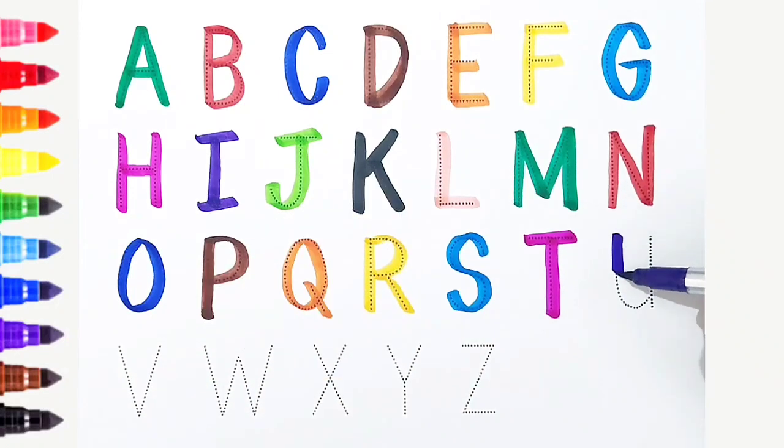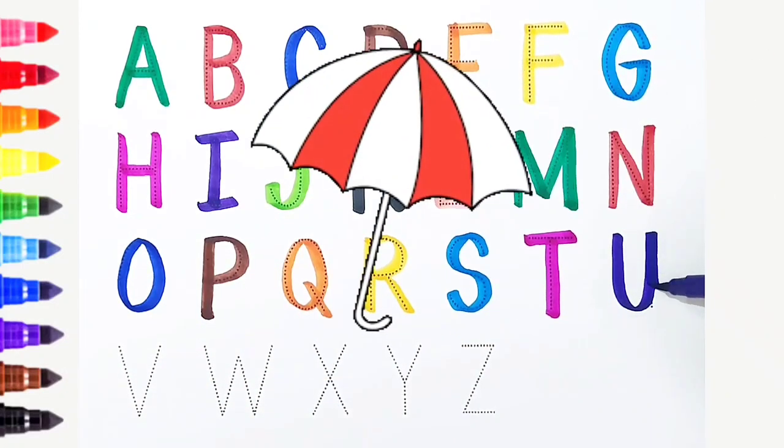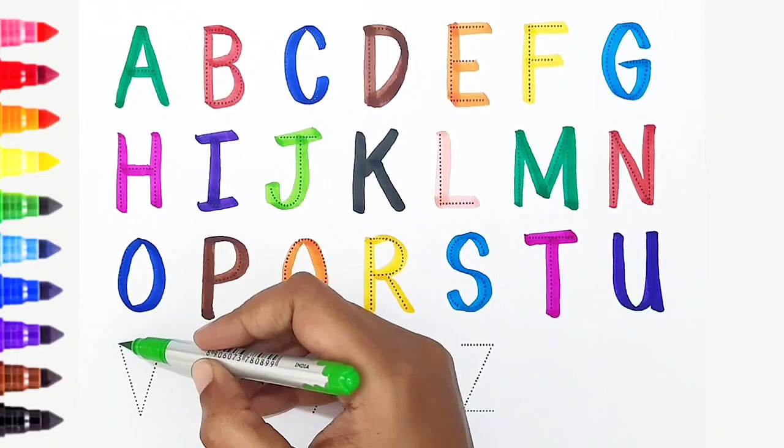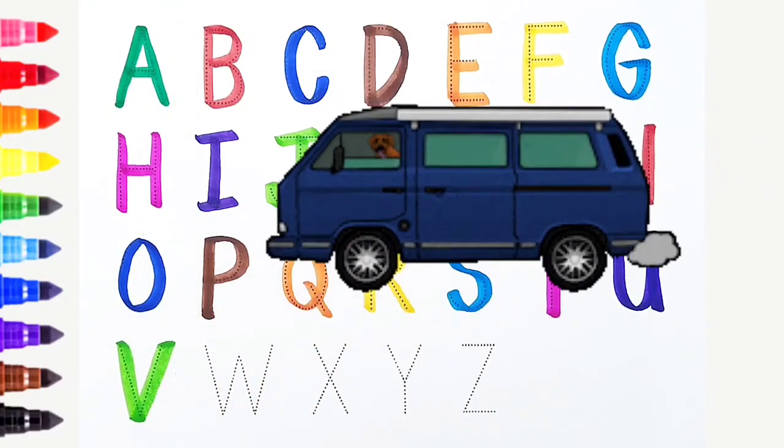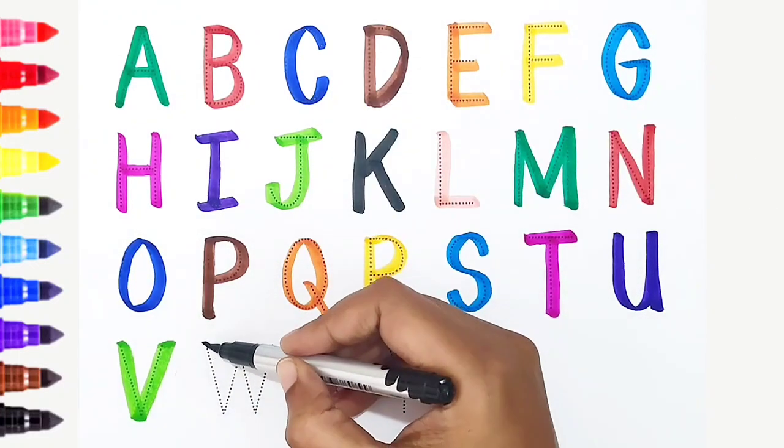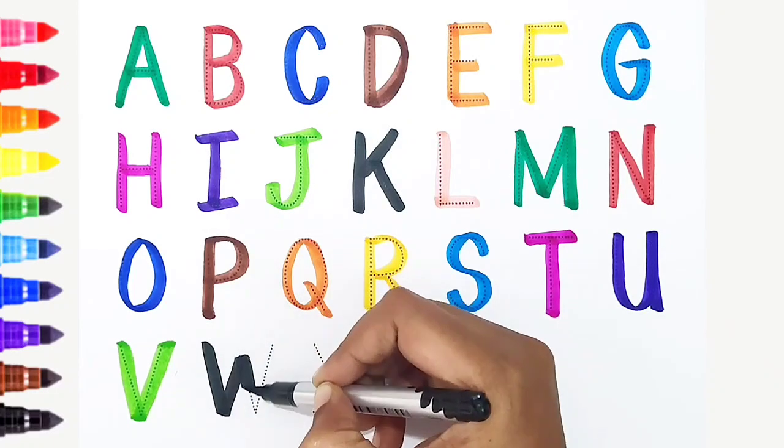U, violet color. U is for umbrella. V, light green color. V is for van. W, black color. W is for watermelon.